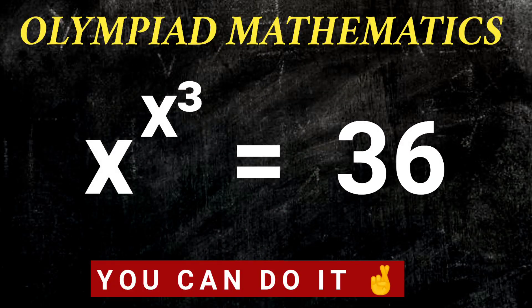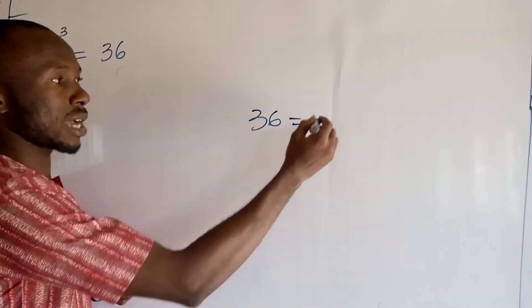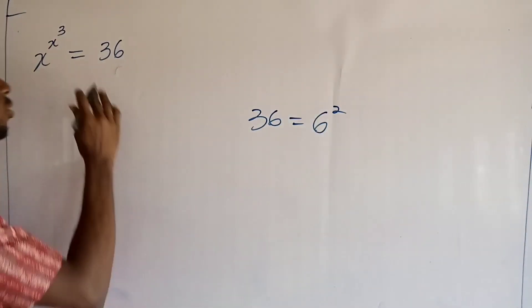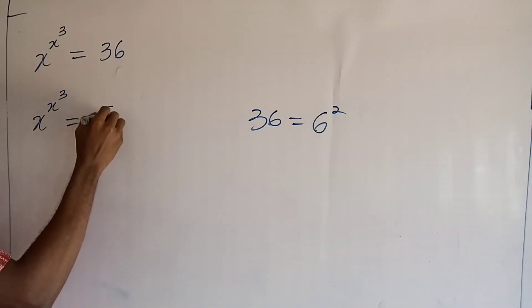Alright viewers, the first thing I want you to note is that 36 can also be written as 6 to the power 2. So here I will write x^(x^3) is equal to 6^2.